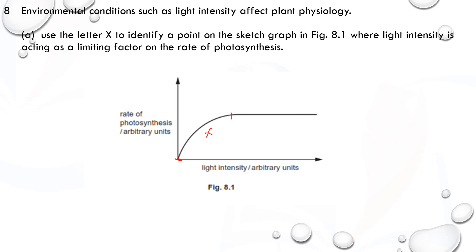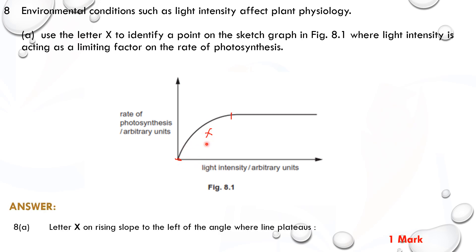By the time the graph reaches its maximum value and levels off, light intensity is no longer the limiting factor. As light intensity continues to increase, the rate of photosynthesis remains constant. The limiting factors at that plateau could be temperature or CO₂ concentration. So X should be placed on the rising slope to the left of the point where the line plateaus.